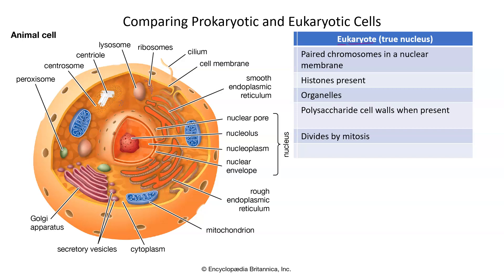In true eukaryotes, not only do they have a nucleus, but it is surrounded by a nuclear membrane, or nuclear envelope, that possesses two membranes and pores. Within this nucleus there are nuclear pores within the two membranes that make up the nuclear envelope. There is a core inside called the nucleolus, which is where all of the paired linear chromosomes reside.